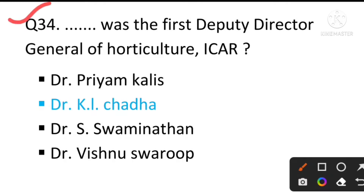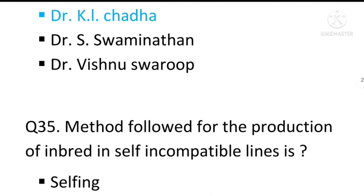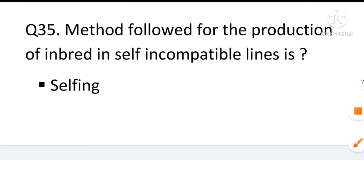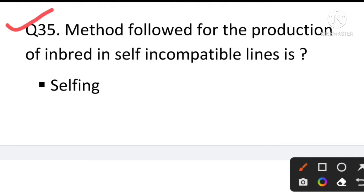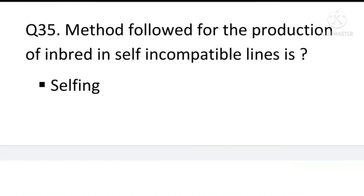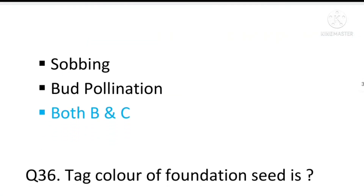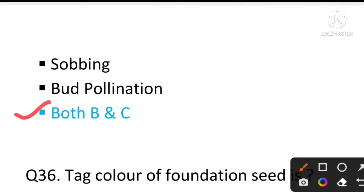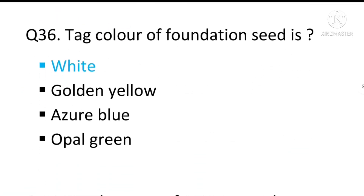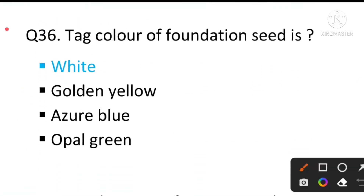Question number 34: The first Deputy Director General of Horticulture ICAR — the answer will be Dr. Kelch Da. Question number 35: The method followed for the production of inbred lines in self-incompatibility — the answer will be both B and C, that is bud pollination and sawing.